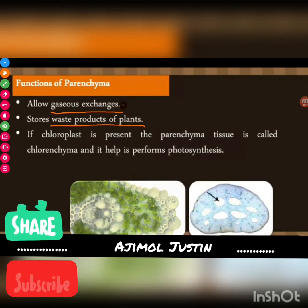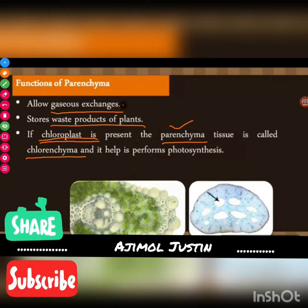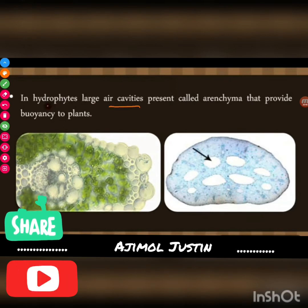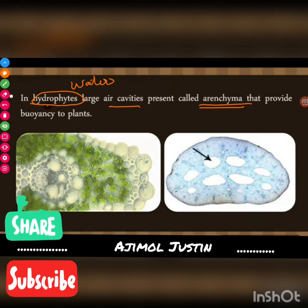If chloroplast is present in parenchyma, that tissue is called chlorenchyma, and its function is photosynthesis. If air cavities are present in parenchyma, that particular parenchyma is called aerenchyma. In hydrophytes — plants that live in water — large air cavities are present. The function of aerenchyma is to provide buoyancy, helping plants float on water.